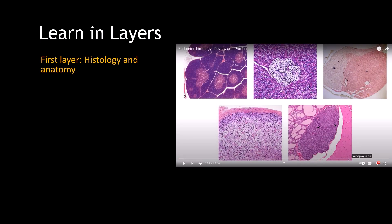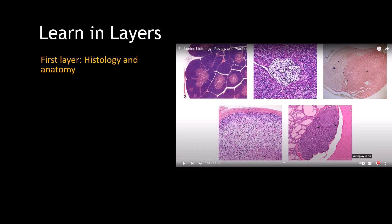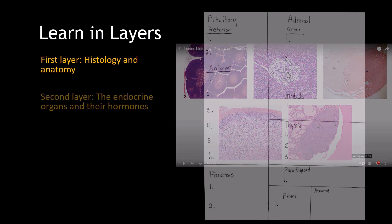The first layer of information is the histology and anatomy. I'll include in the description a video I've done about histology and anatomy if you haven't gotten started with that. Once you get down the histology and anatomy, you're kind of safe to move forward to the hormones being released from those endocrine organs. You can learn some hormone names while learning histology, but when you're learning histology and anatomy, just focus on that.